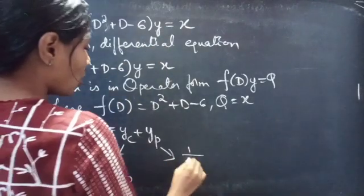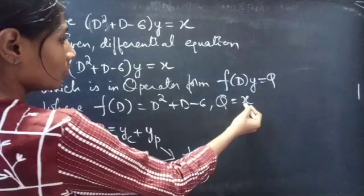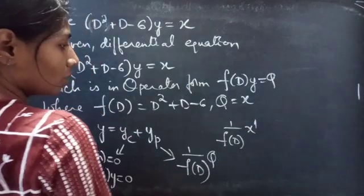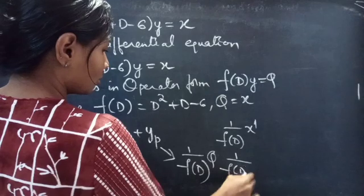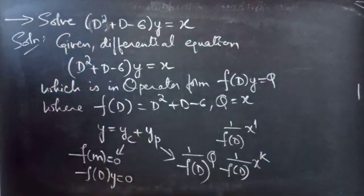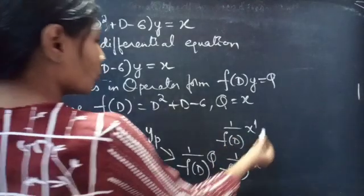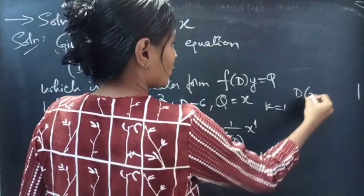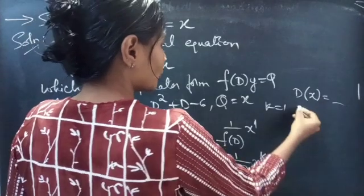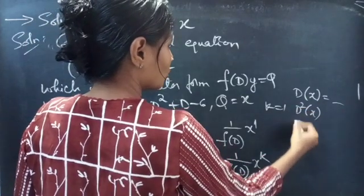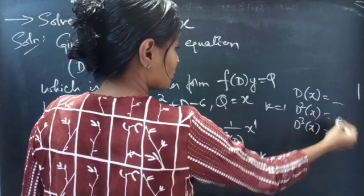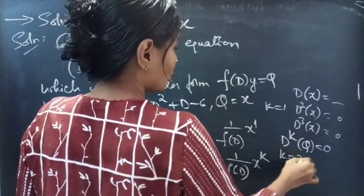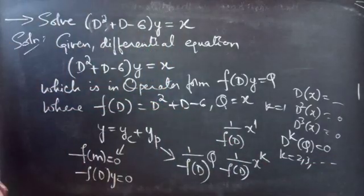We'll find yp using 1/f(D) into Q. Here Q is x, which is in x^k form for k = 1. Since k = 1, we'll get only one non-zero derivative of x — d²(x), d³(x) and so on become 0. In general, d^k of Q equals 0 for k = 2, 3, and so on. We'll see this later.